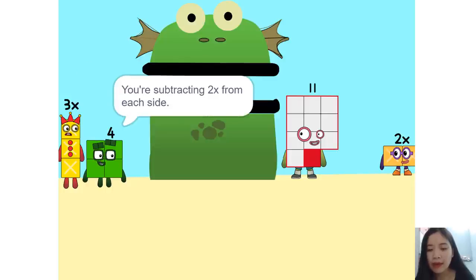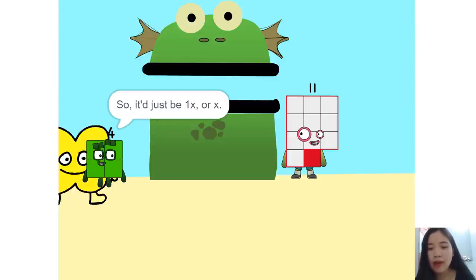Why? Think of it this way. You're subtracting 2x from each side. So it'd just be 1x or x. Correct.